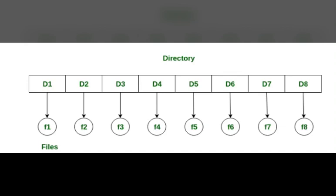Advantages of single level directory: implementation is very easy, searching is faster if files are smaller, and operations like file creation, searching, deletion, and updating are very easy. Disadvantages: there may be name collisions since two files cannot have the same name, searching becomes time-consuming if the directory is large, and you cannot group the same type of files together.